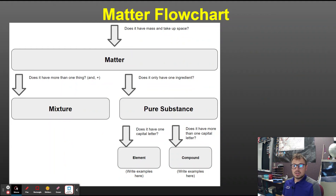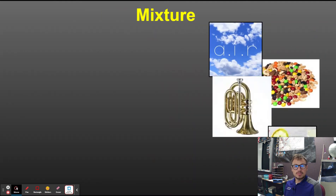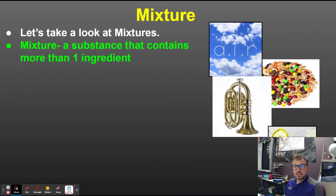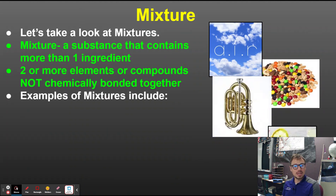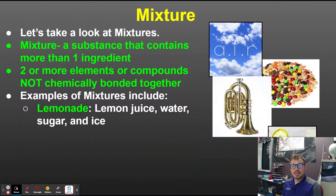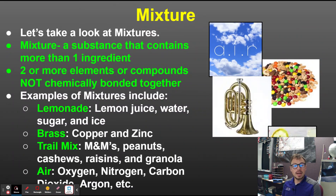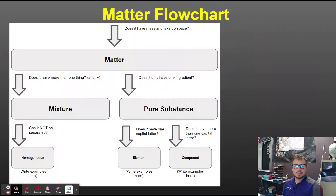Now let's look at what happens if it has more than one ingredient. If it does, it's a mixture. A mixture is a substance that contains more than one ingredient — two or more elements or compounds not chemically bonded together. Some examples are lemonade, brass, trail mix, and air.